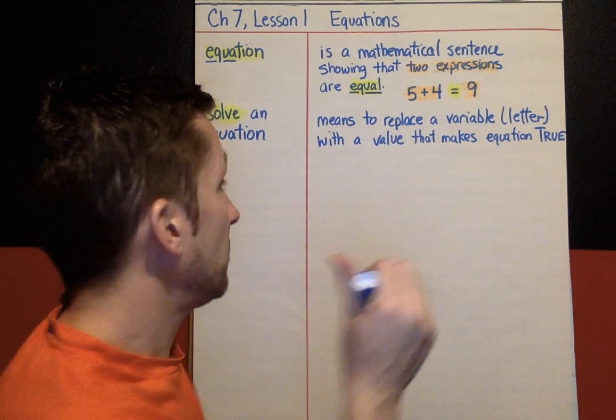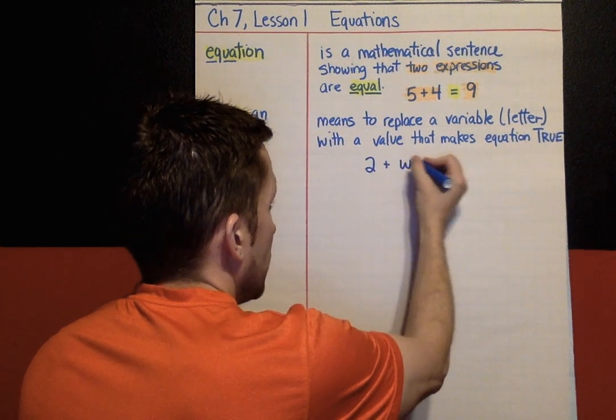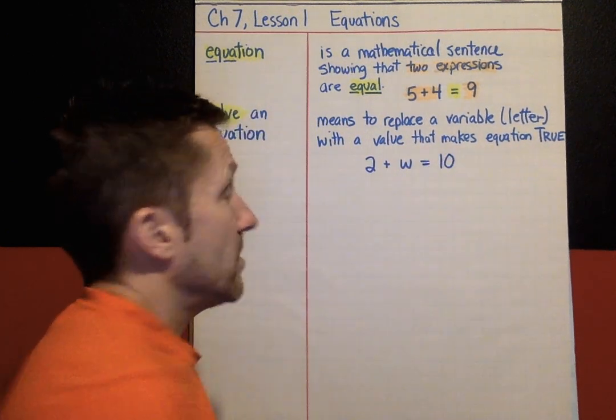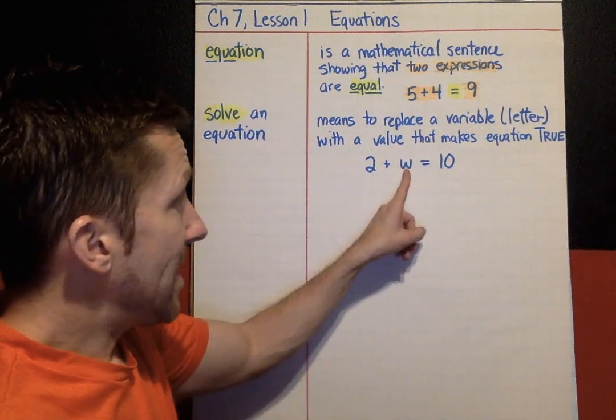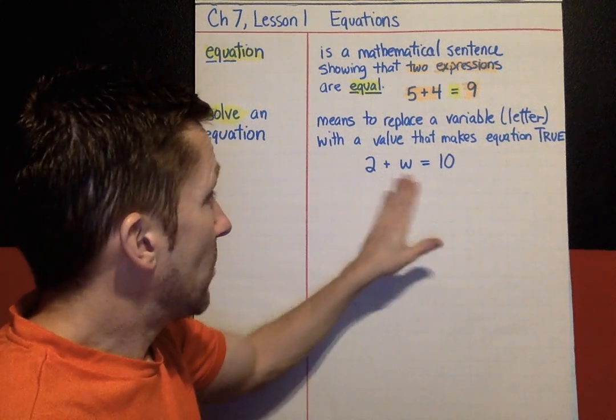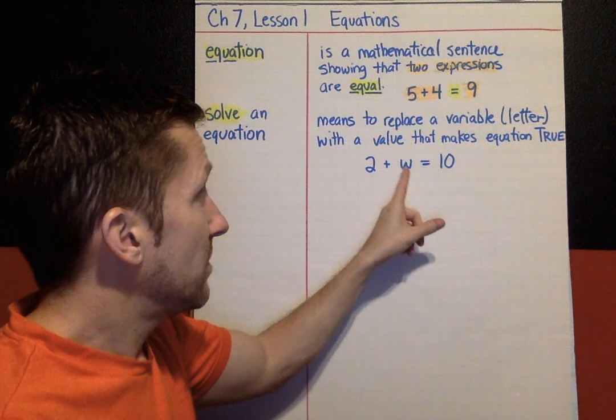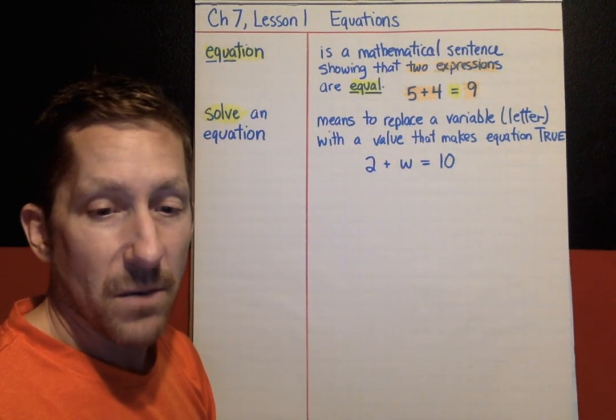Here is an example. Two plus w equals ten. You can probably look at that, and just figure out, what value can we put in for w that makes this equation true. Well, two plus eight equals ten. So, the value that makes this true is w equals eight.